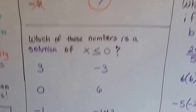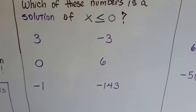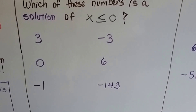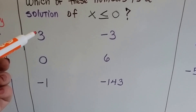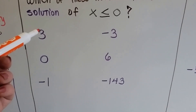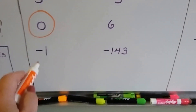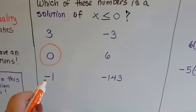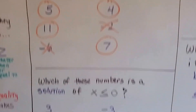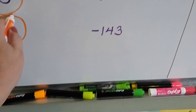How about this one? Which of these numbers is a solution for x is less than or equal to 0? It's got to be less than 0 or equal to 0. Well, 3 isn't less than 0 — that's bigger. Is 0 less than or equal to 0? Yes, so that's a solution. How about negative 1? Is negative 1 less than or equal to 0? Yes, it is. Remember, negative numbers are less than 0, so this is a solution. Negative 1 is less than 0.